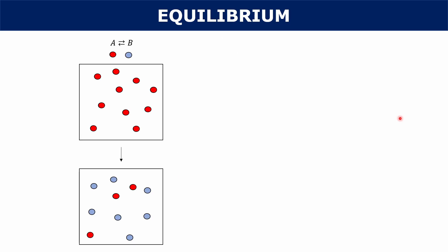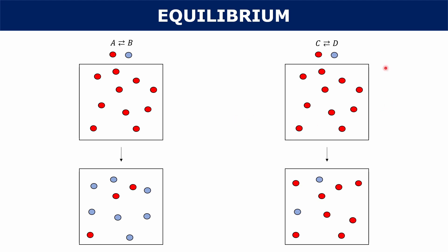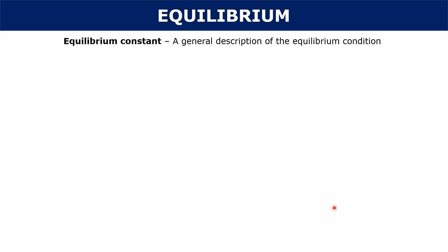Let's talk about different types of equilibrium. Looking at a reaction where A is in equilibrium with B: at the start you have red A reactant molecules, and at the end you have mostly blue B product molecules with some reactants still present — this is product favored. In contrast, a reaction like C in equilibrium with D might end up with only a few D product molecules and still a lot of reactants — this is reactant favored. We need a mathematical way to describe these equilibrium conditions, and the equilibrium constant does that.